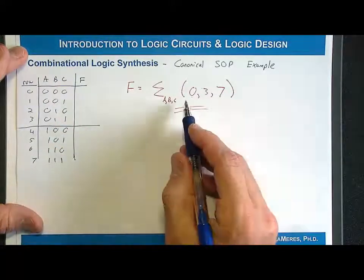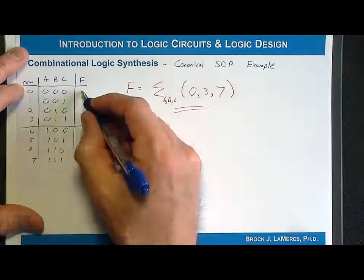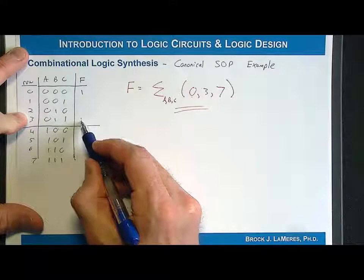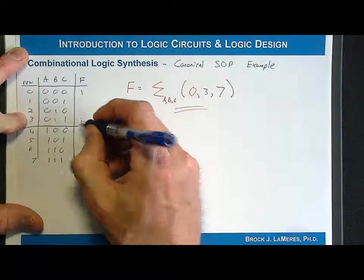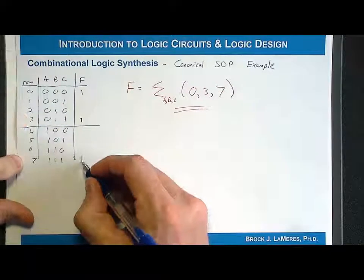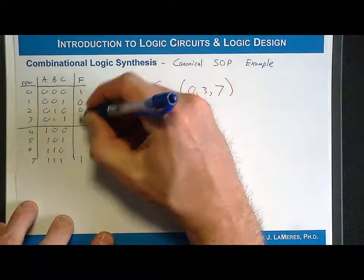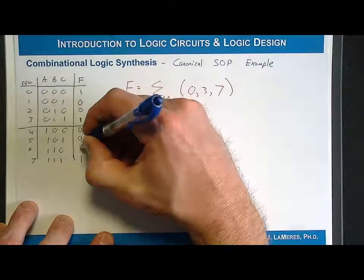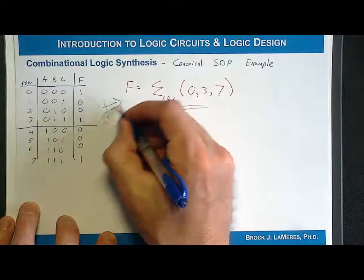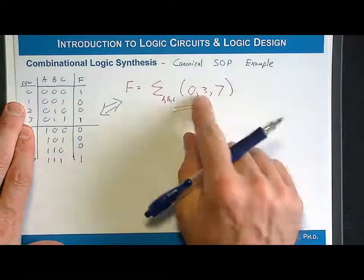From the minterm list, I know that row 0 had an output of 1, row 3 had an output of 1, and row 7 had an output of 1. For all the other rows they were 0, so I fill in the zeros, and now I have a truth table — which is the exact same piece of information as the minterm list.